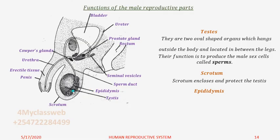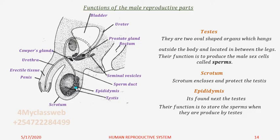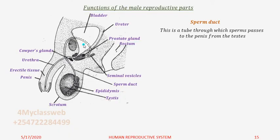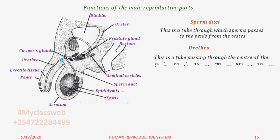Then we have the epididymis, which is attached to and found next to the testes. Its function is to store sperms when they are produced by the testes. Attached to the epididymis we have the sperm duct. This is a tube through which sperms pass from the testes to the penis. Below here, the sperm duct joins the urethra — a tube passing through the center of the penis through which sperm and urine pass out.